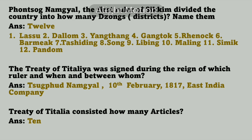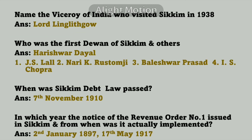The Treaty of Titalia was signed during the reign of which ruler, and when, and between whom? The Treaty of Titalia was signed during the reign of Chutup Namgyal on 10th February 1817, between the East India Company. The Treaty of Titalia consisted of how many articles? 10.